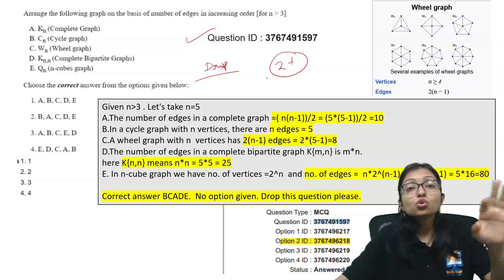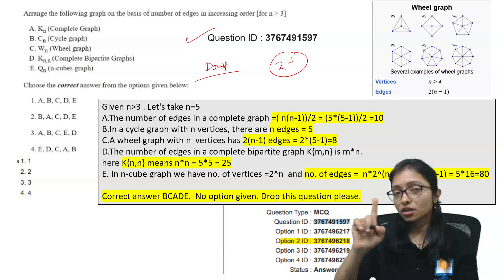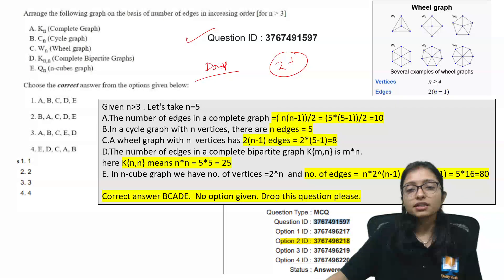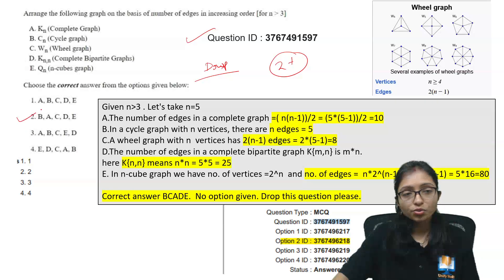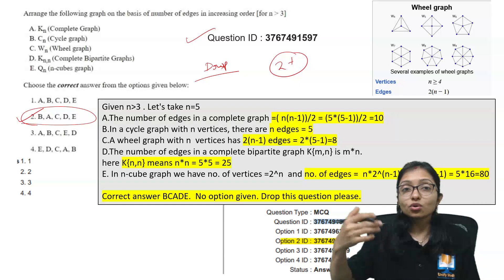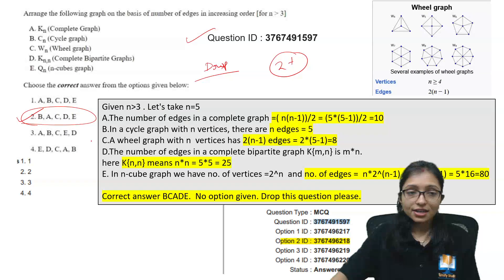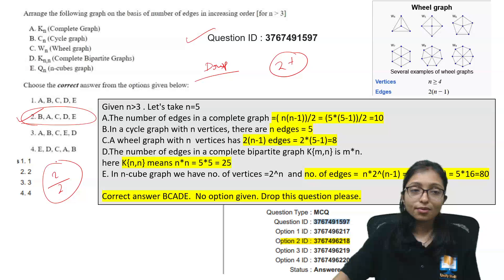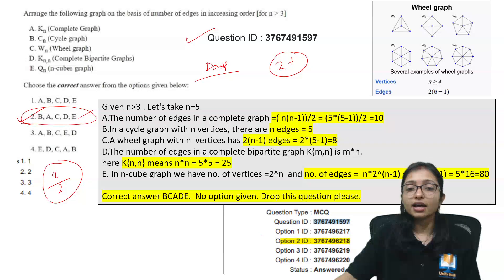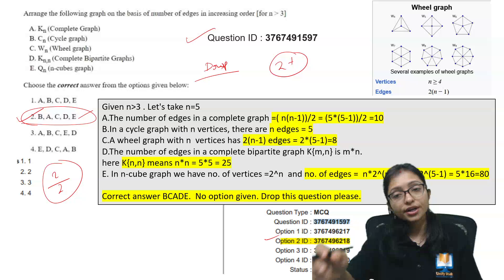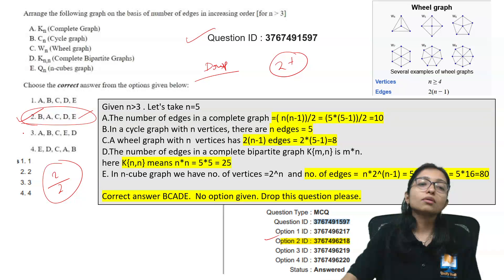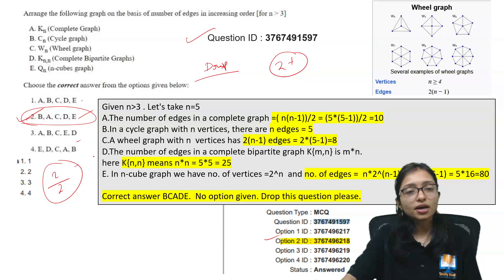Everyone will get an extra 2 marks for those who attempted the question. Don't add extra 2 marks manually if you already marked option 2 — your marks are already added. There's no need to add again. Maximum you can get is 2 out of 2. If you already marked option 2 and the current answer is also option 2, you already have the marks. Only those who did not mark option 2 can get the marks, as this question will be dropped.